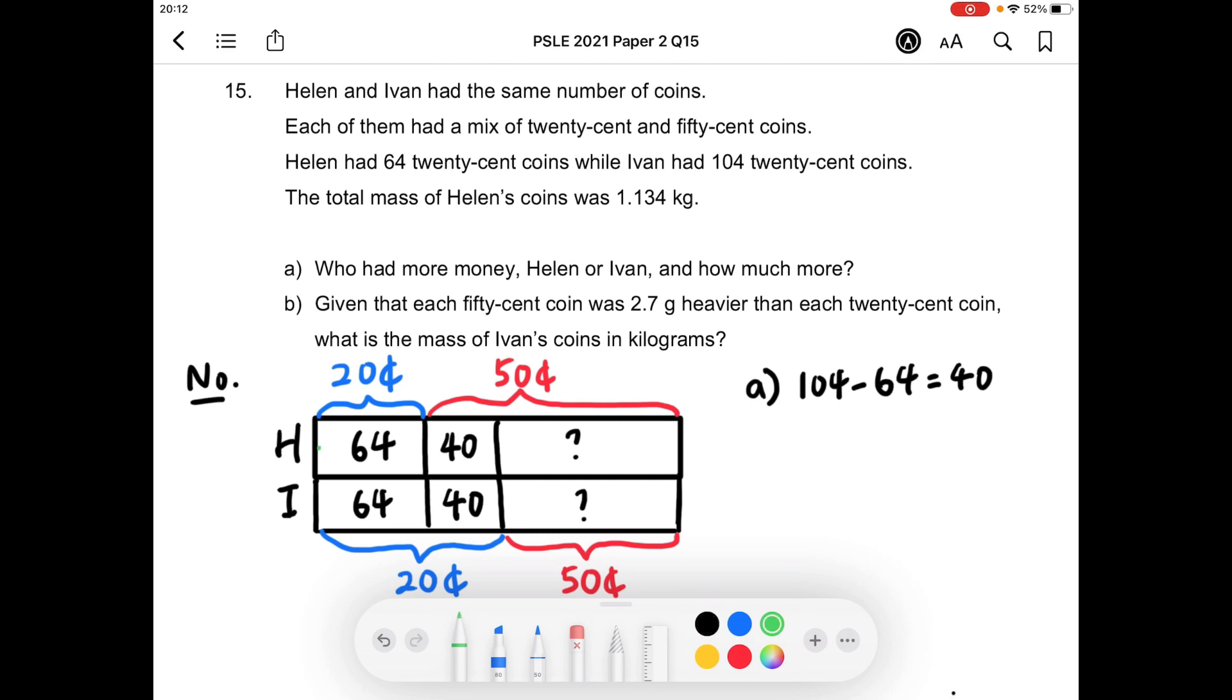If you look at the model closely, the part where I'm shading in green represents the same amount of money for both Helen and Ivan because they are all 20 cent coins. In fact, 64 of them. So the amount of money there is the same in green. Likewise, these parts here where I'm going to shade in green also have the same amount of money because they are all 50 cent coins.